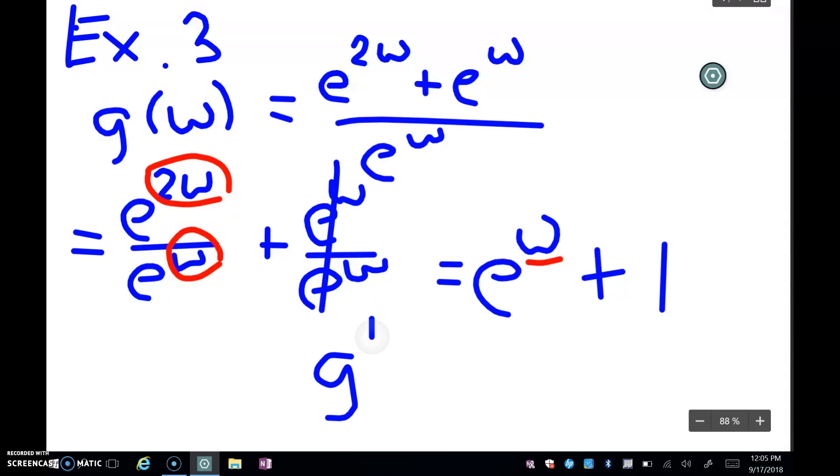Now I do that derivative. So remember the derivative of e^w is just e^w. The derivative of a constant that's by itself is 0. So I have e^w + 0, which is e^w. And that is all the examples I have for you for section 3.3. So now try to do the homework. Good luck.